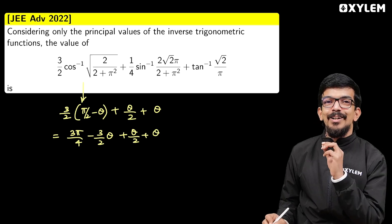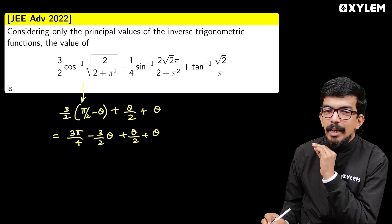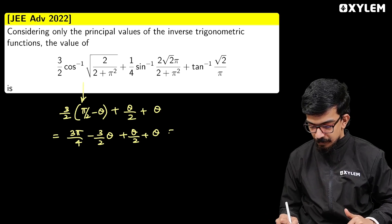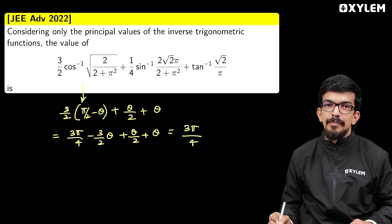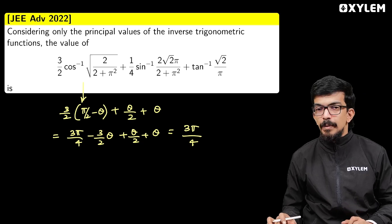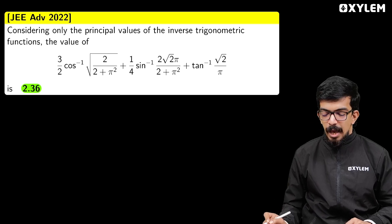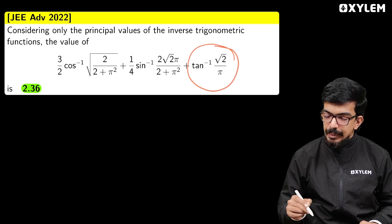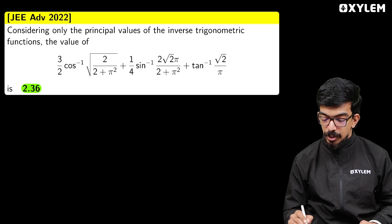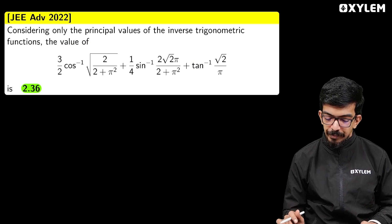If we say that theta cancels, the standard value is what remains. What is it? It cancels. 3π/4 is the answer. 3π/4 has the value of approximately 2.36. The non-standard value of theta cancels, and 3π/4 is the answer. Right?